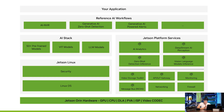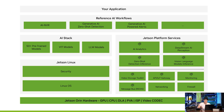JetPack 6 includes three parts. First is Jetson Linux, which is the board support package (BSP), with the bootloader, Linux kernel, Ubuntu desktop environment, NVIDIA drivers, toolchains, and more. It also includes security and over-the-air OTA features.